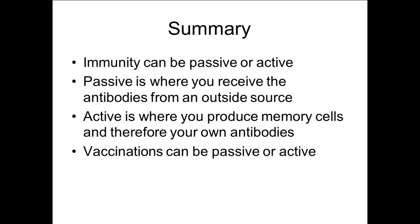In summary, immunity can be either passive or active. Passive is where you are given the antibodies, either from your mother or from an outside source like a vaccination. Active is where you produce your own memory cells and therefore your own antibodies, either through prior exposure to the pathogen or through an active immunization using an attenuated version of a pathogen.